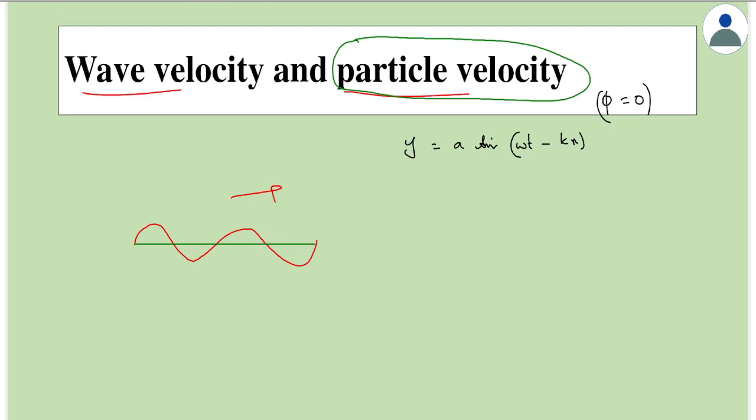This term in the brackets is called the phase. For a given wave equation, this is a constant because it's just an angle, just a number. It remains a constant, which means you can say omega t minus k into x is a constant, just a number.